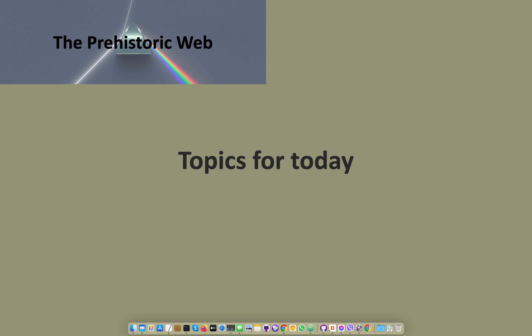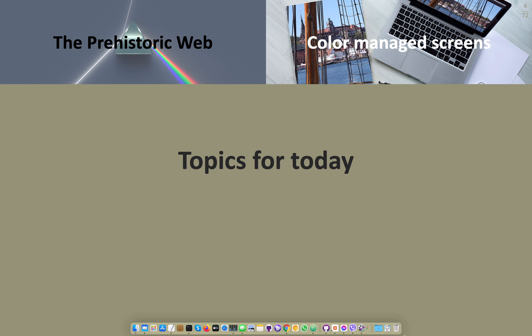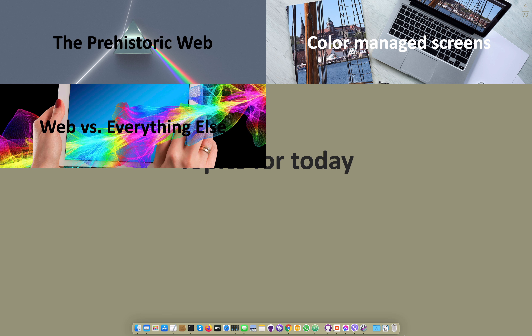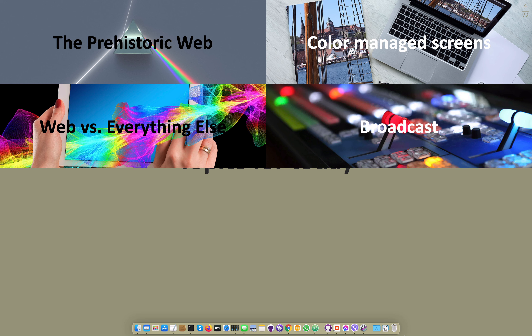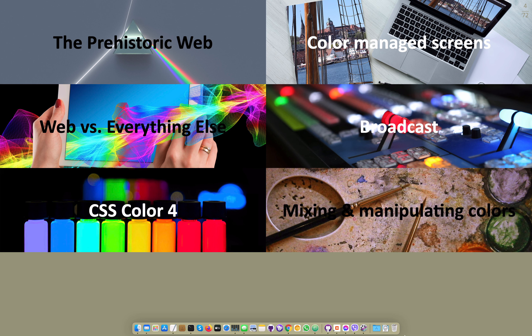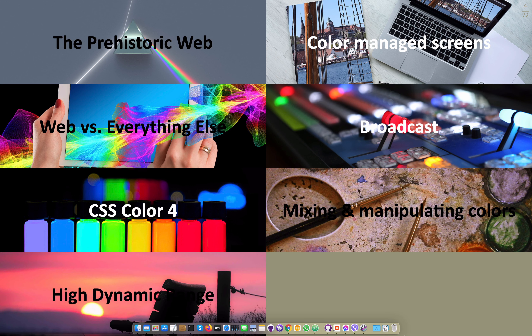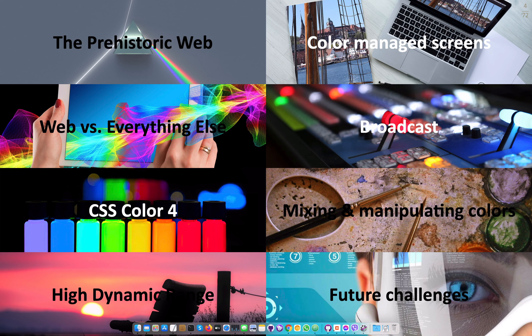Topics for today: firstly, the prehistoric web and how it all started. Then what happened when colour management arrived. How the web is different from everything else we've been hearing about today. How web and broadcast interact. CSS Color 4, which brings us wide colour gamut, and how we can build on that to mix and manipulate colours. High dynamic range. And lastly, some future challenges.